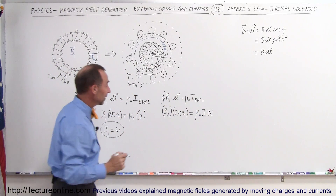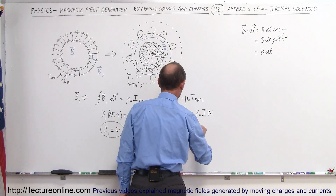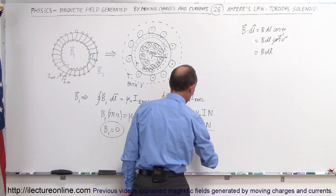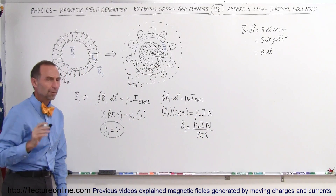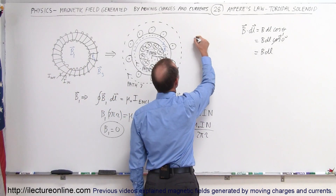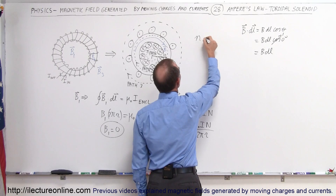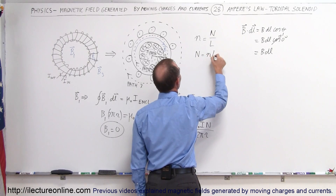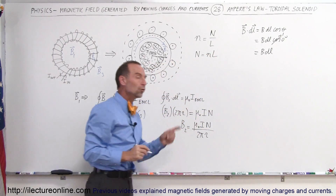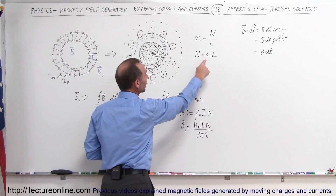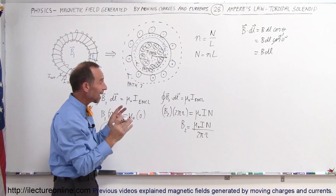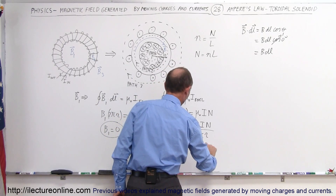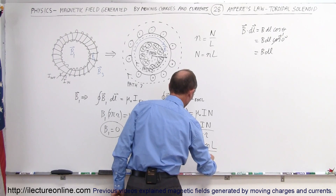So B2 equals μ₀ times I times N divided by 2πr, where 2πr is the path length. Remember the wire density n (wires per unit length) equals the total number of wires N divided by the length L, so N equals n times L. We can replace the number of wires by the linear density of wires times the length traveled, giving B2 = μ₀ × I × nL / 2πr.